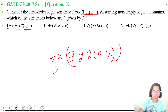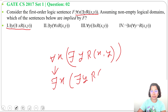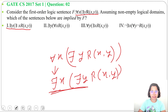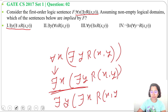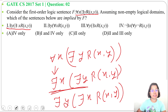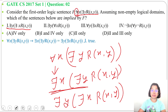So from F we can write: there exist X, there exist Y, R of X, Y. Now both quantifiers are the same — existential and existential — so we can alter their position. We can write: there exist Y, there exist X, R of X, Y. This matches sentence 1, so sentence 1 is true. From for all X we derived there exist X, then switched the position.